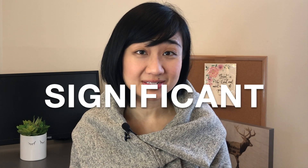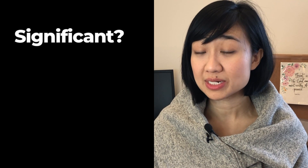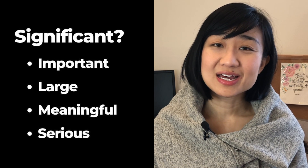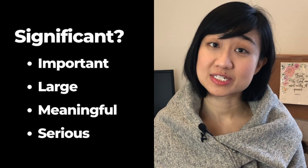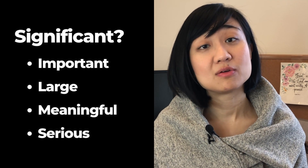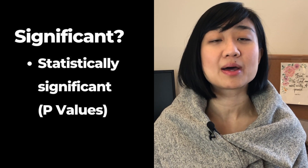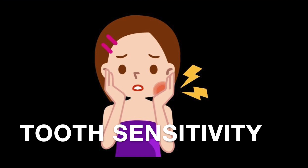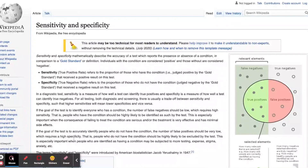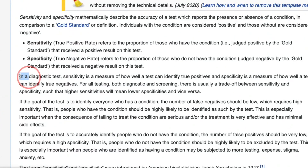Number three, be precise. A common example is the word 'significant.' When you read a newspaper or blog post, 'significant' could mean many things — important, large, meaningful, or serious. But in a research paper, we usually mean statistically significant, and we are talking about p-values. Another example is 'sensitivity.' In general, sensitivity could mean how somebody perceives something or an allergy to food. But in research papers, depending on the research you do, the term sensitivity is a measurement of how well a test can detect true positives.